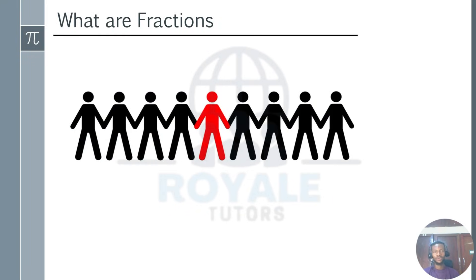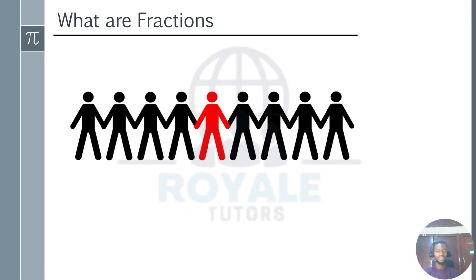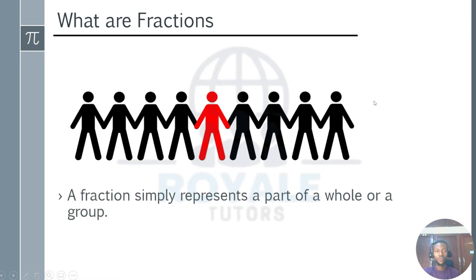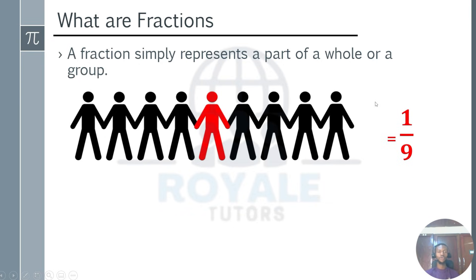Imagine this image. We have nine men in this image holding hands together, but one of them is colored red while others are colored black. What does this mean? We can see that out of nine men, only one is colored red while others are colored black. So we call this one out of nine — that is, one over nine. This helps us understand what fractions are.